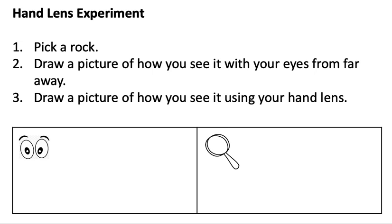Okay, so first you picked your rock. Second, you are going to set it down on a surface - you could do it on the ground or on a table. You're going to draw a picture of how you see it with your eyes from far away in this area right next to the little eyes here. So it should be probably pretty tiny, right? Maybe it's just a little one like that.